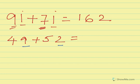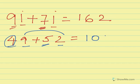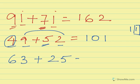49 plus 52: in the 1s position, 9 plus 2 is a carrying number, so 1 comes to the 4, making it 5. Then 5 plus 5 is 10. The end number of 9 plus 2 is 1, since 9 plus 2 equals 11.